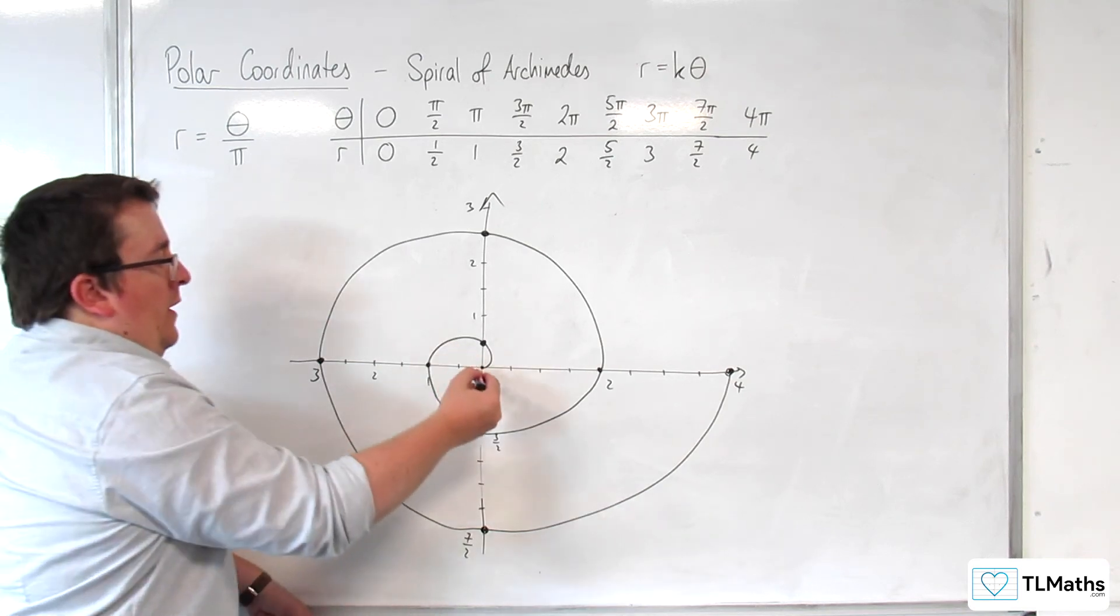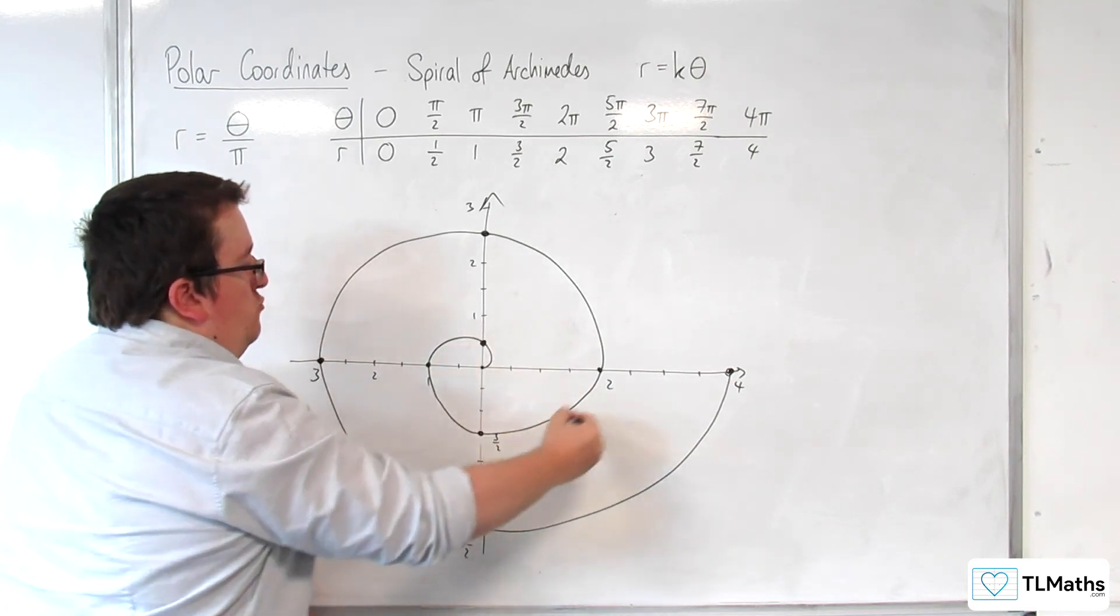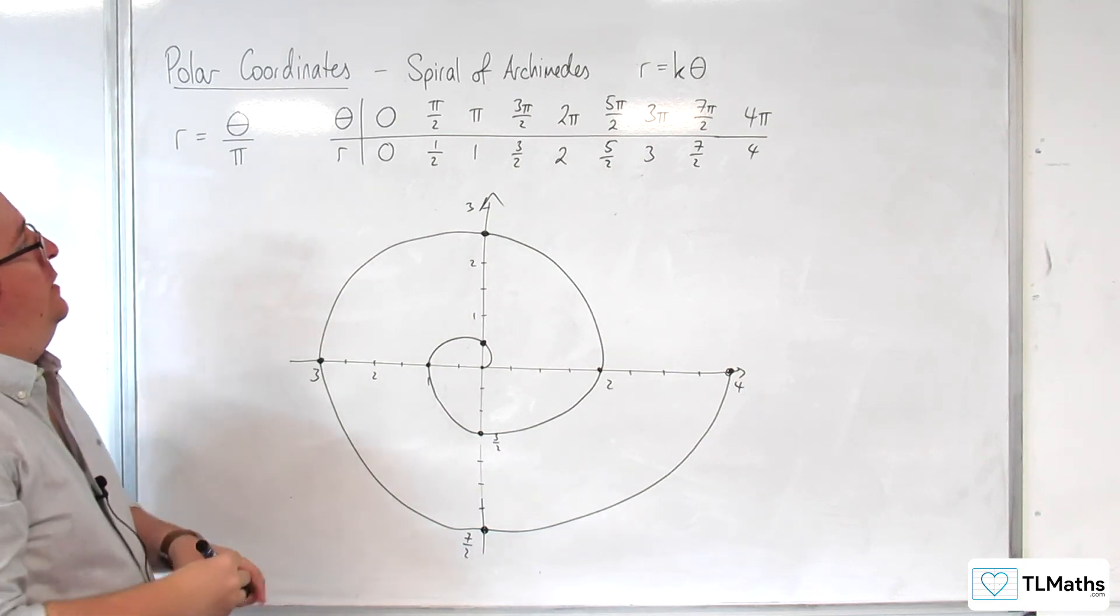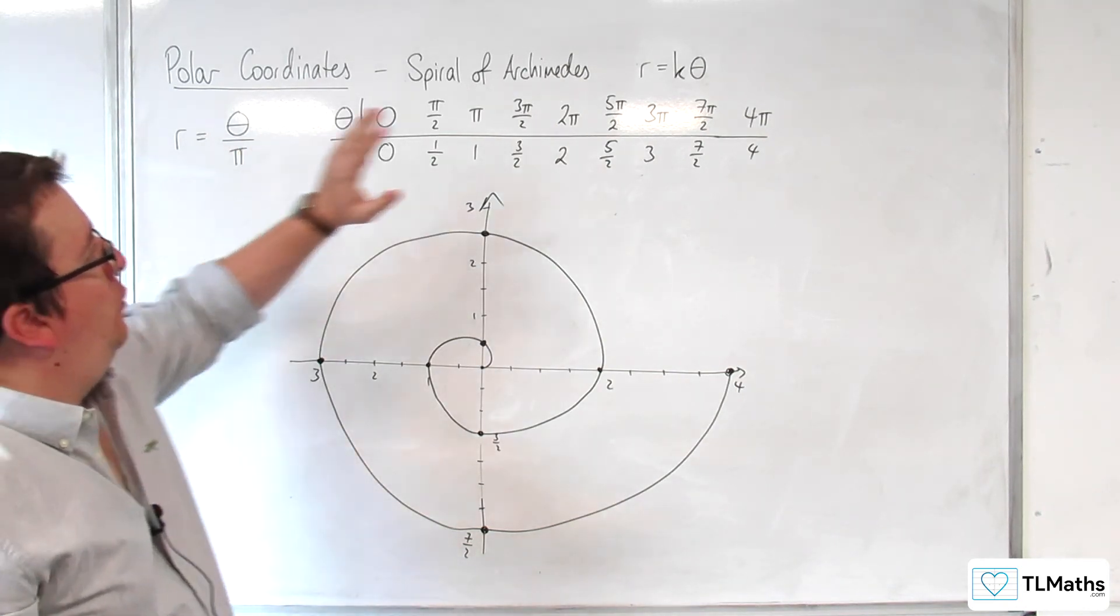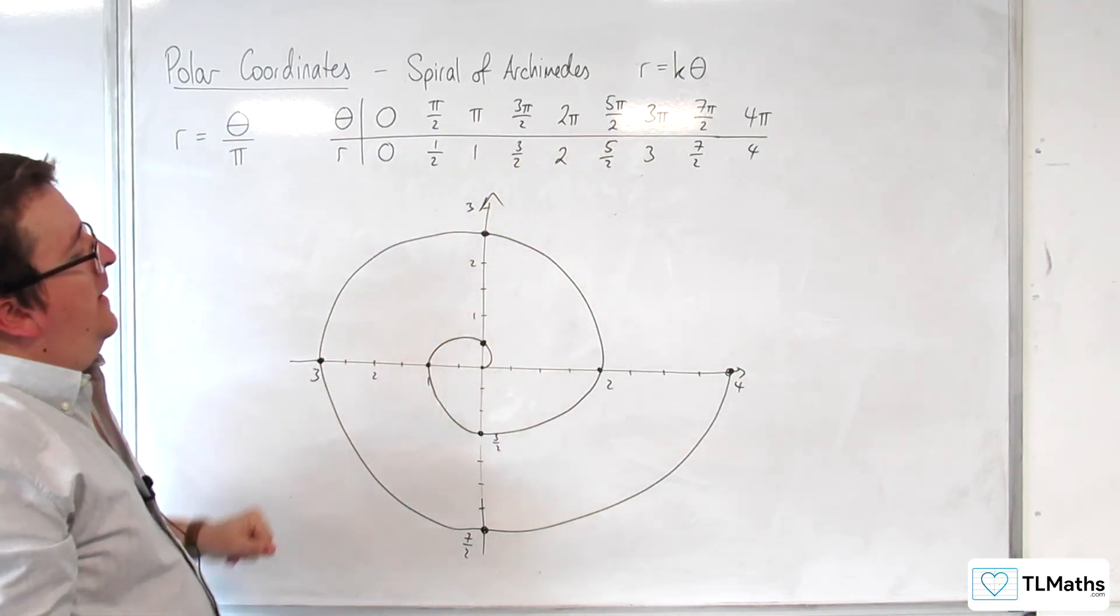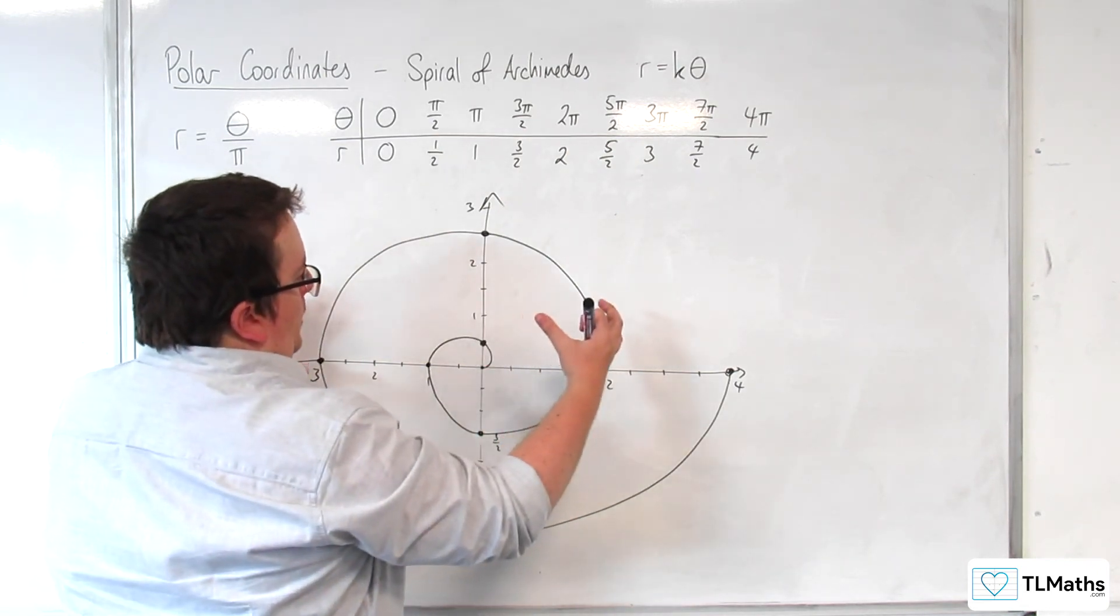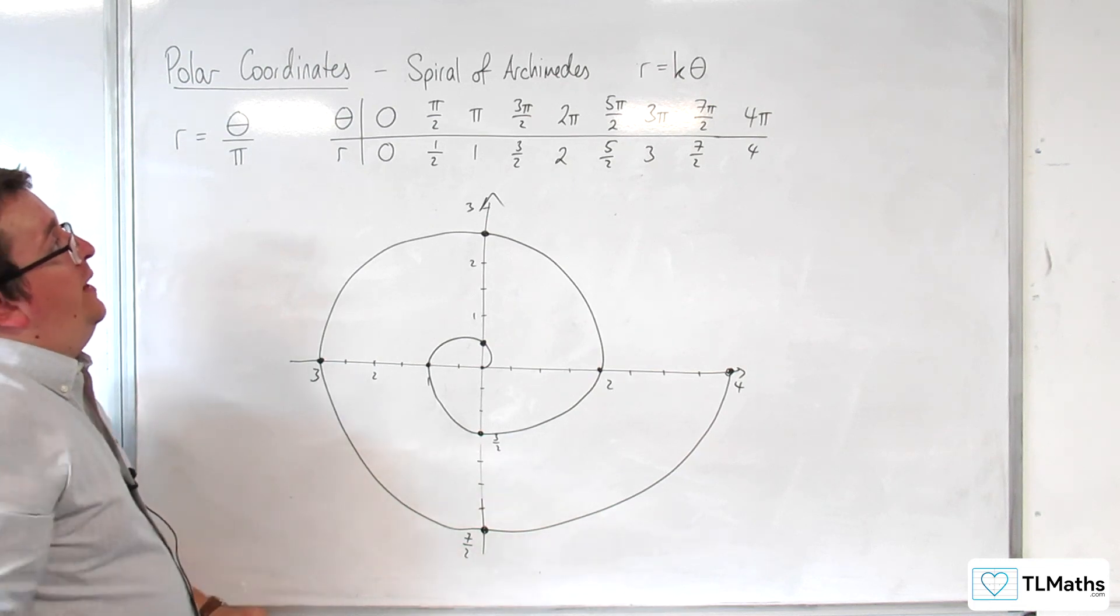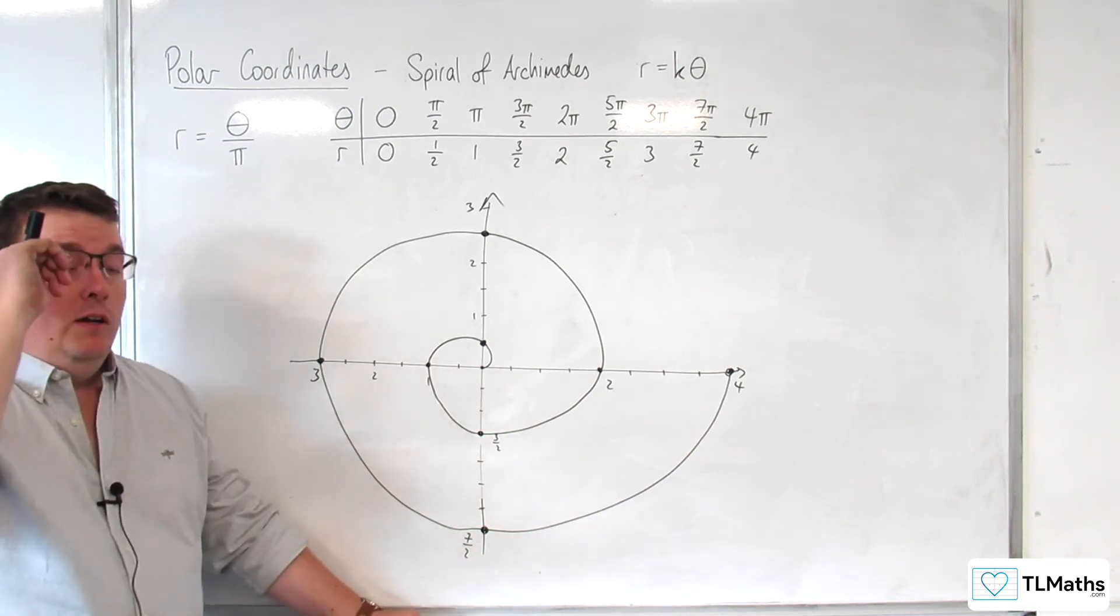OK. So, what happens is that from the origin, it spirals its way outwards. And that you will find for different values of k, how kind of stretched that is. So, that's how we can sketch our spiral of Archimedes.